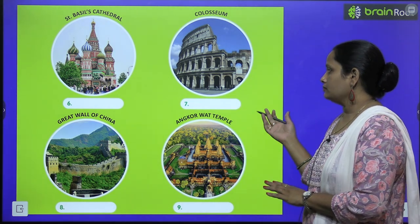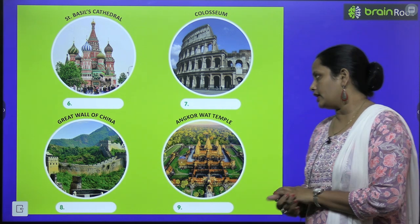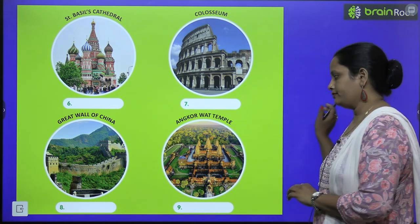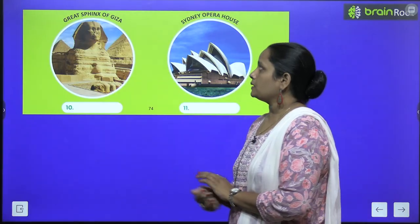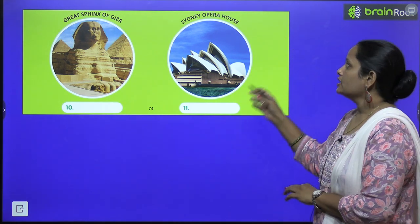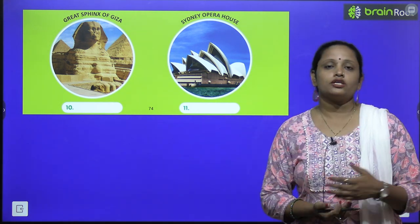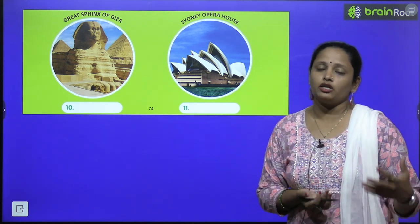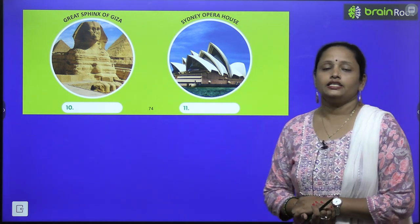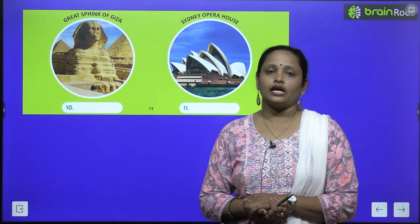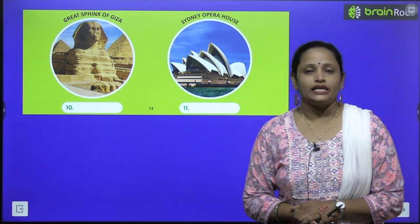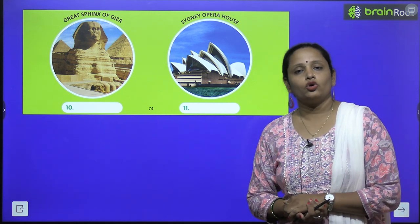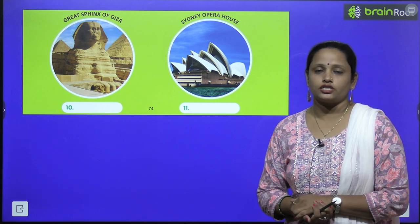The Colosseum, the Great Wall of China, Angkor Wat Temple, the Great Sphinx of Giza, and the Sydney Opera House — these monuments are in which place? You can write the country name. I hope you will do it yourself.